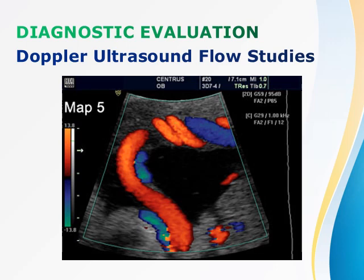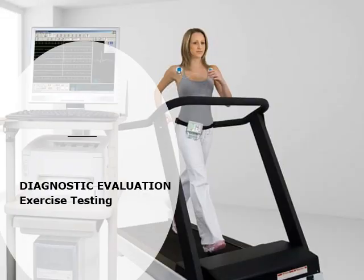Diagnostic tests include Doppler ultrasound flow studies, which detect blood flow in vessels and measure brachial pressures in both arms. Exercise testing has the patient walk on a treadmill at 1.5 mph with a 12% inclination for a maximum of 5 minutes. The normal response is little or no drop in ankle systolic pressure after exercise, measuring how long a patient can walk and ankle systolic pressure in response to walking.